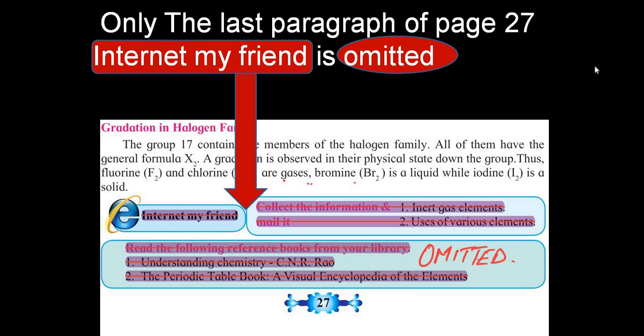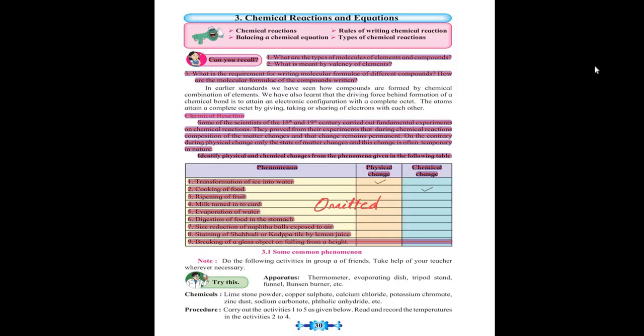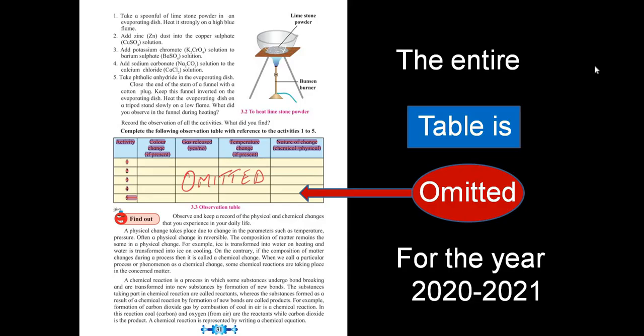Go on to the next page, number 27. The lower part of the page, 'Internet My Friend' and the reference books, stand to be omitted. Page number 28: 'Do You Know' section on the top side stands to be omitted. So children, we go on to the third chapter: Chemical Reactions. First, page number 30: you can see half of the page stands to be omitted. Page number 31: the table stands to be omitted for the current year. This is just this year omitted, so do not spread this information to your juniors next year when everything gets normalized.